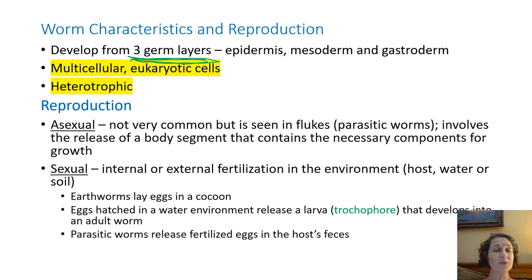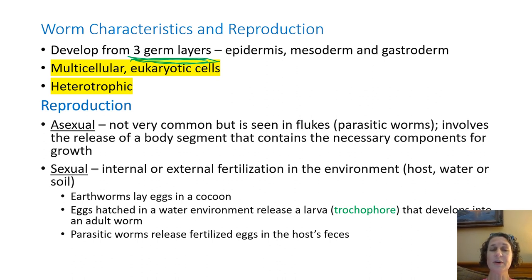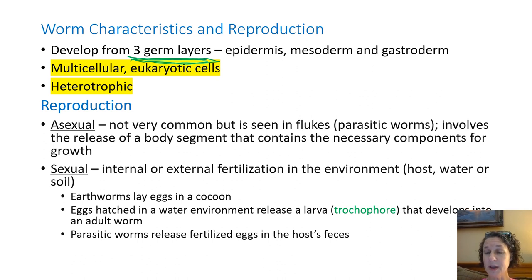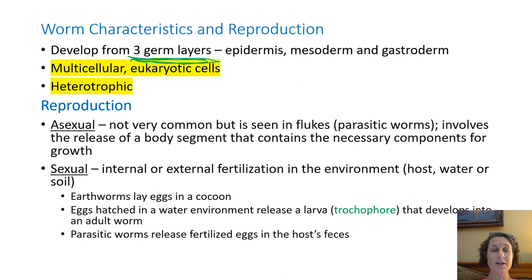Most worms are hermaphroditic, but they do still not fertilize themselves. With sexual reproduction, it can be internal or external. The females can lay eggs that are then fertilized by male sperm, or they could take the sperm into their body — the females can be internally fertilized. This has to happen either within the host if they are parasites, within water if they live in water, or in the soil especially if we're talking about earthworms. Earthworms lay their eggs in a cocoon, and it does take two different worms — a male and a female — to produce the eggs, forming a little cocoon underground.